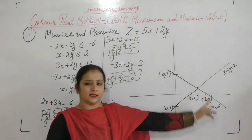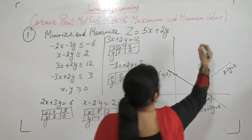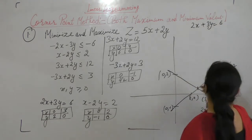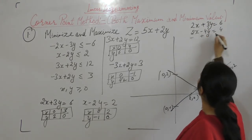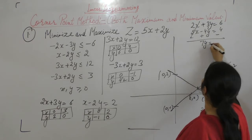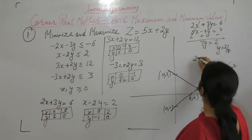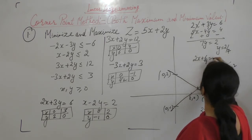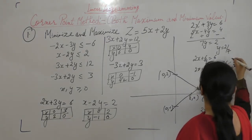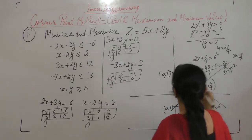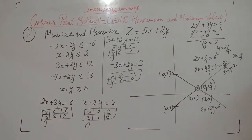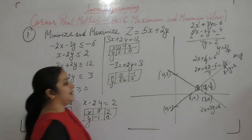We need to find the point of intersection of these two lines. One is 2x plus 3y equals 6, and the other is x minus 2y equals 2. Multiplying the second equation by 2 gives 2x minus 4y equals 4. Subtracting gives 7y equals 2, so y equals 2 by 7. Substituting back, x equals 18 by 7. So this point is (18/7, 2/7). Let this be P1.